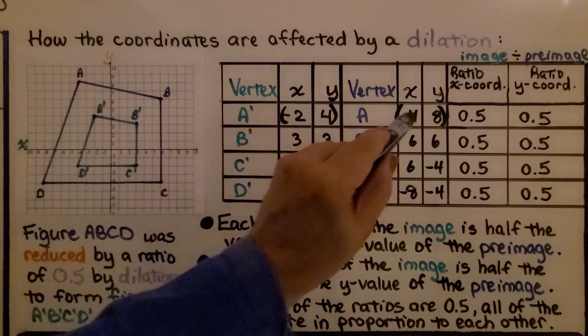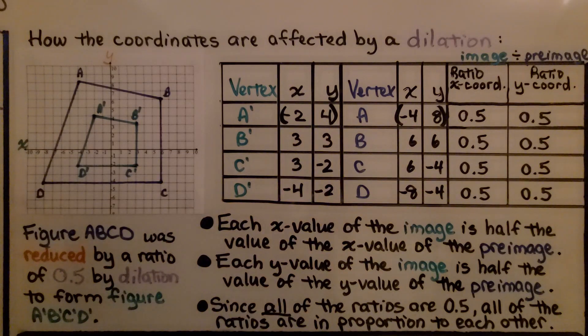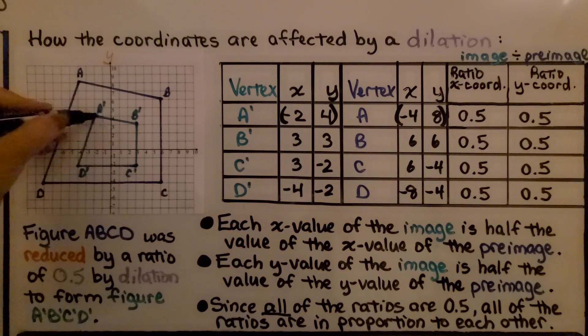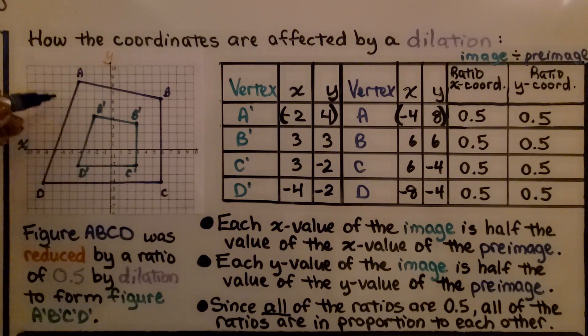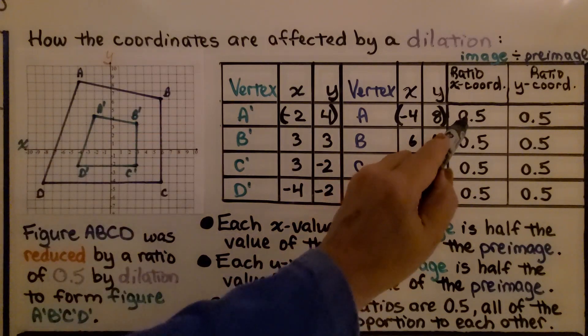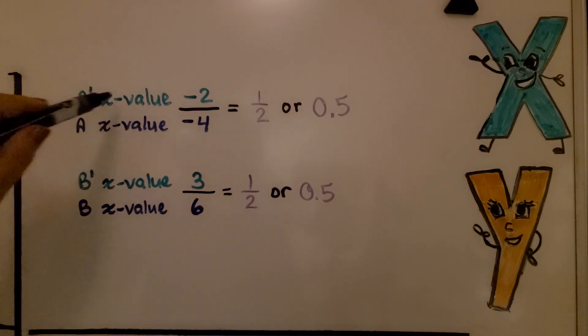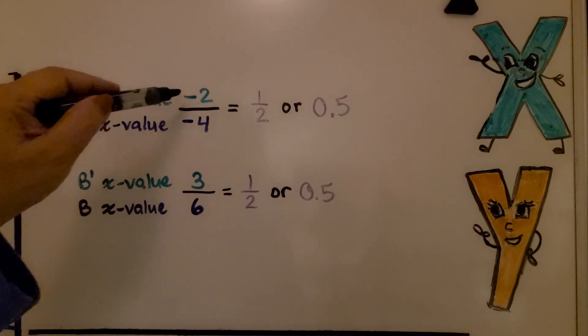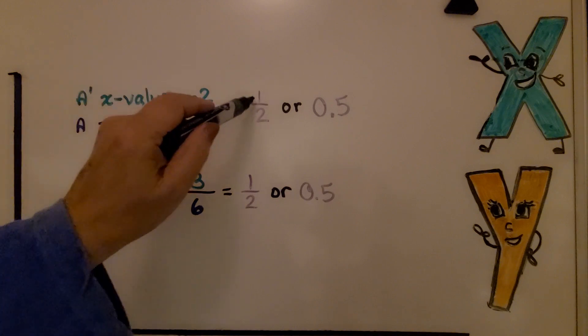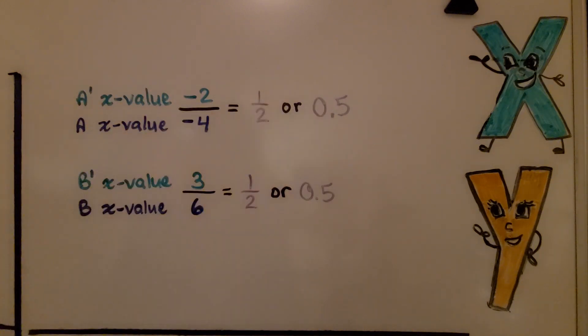We look at each one of these as an ordered pair. If you look at A', it's at negative 2, 4 and A is at negative 4, 8. We divide and we get a ratio of 5 tenths. We took A' x value of negative 2 and divided it by A's x value of negative 4. We have a negative divided by a negative, which makes a positive, and this is 1 half or 5 tenths. And we did it to each one. We had B's x value of 3 and B's x value of 6, which is equal to 1 half or 5 tenths.